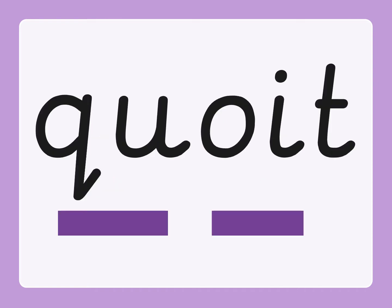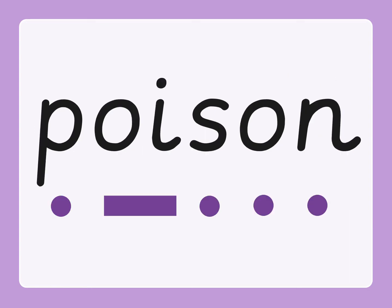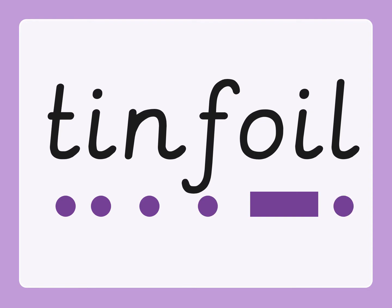C-oit. Coit. A coit is a rubber ring that we use in PE sometimes to play games or to throw. P-ois-on. Poison. T-i-n. Oil. Tin foil. I use tin foil to wrap my sandwiches when I've made them to bring them to school.